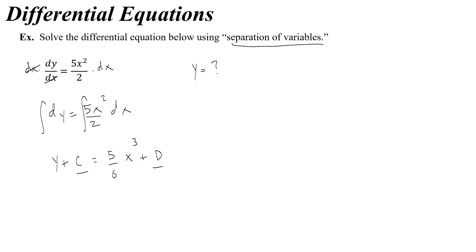But because these are both constants, I can actually subtract c from both sides and write y equals 5/6 x to the third plus, I don't know, we can call it e, where e is equal to d minus c, some new constant.